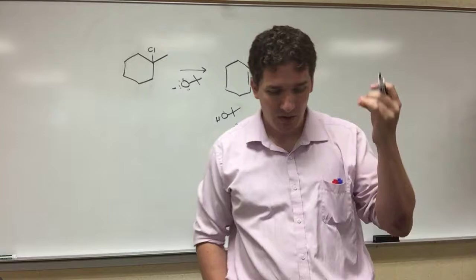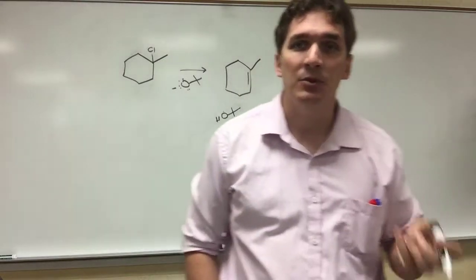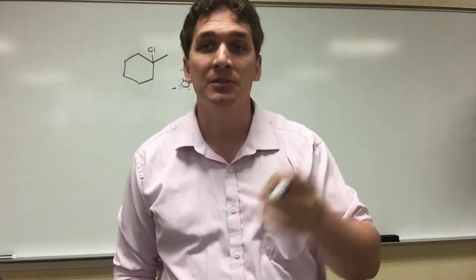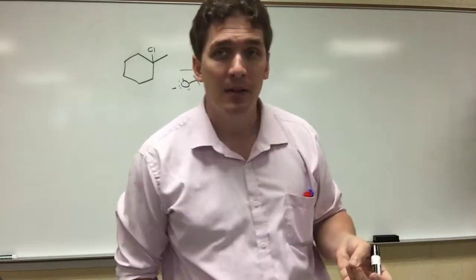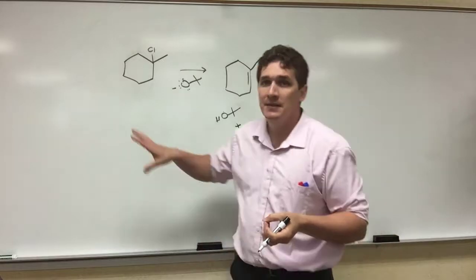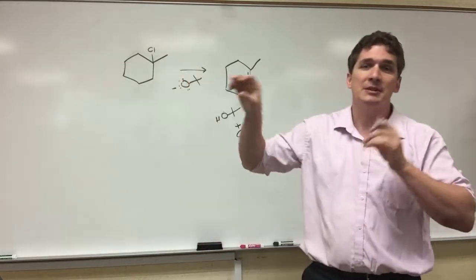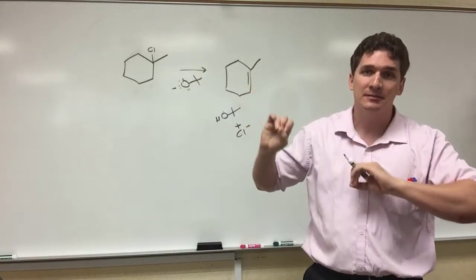So this is called dehydrohalogenation. We are removing a hydrogen and removing a halogen. So we have the 'de' for removal, 'hydro' for the hydrogen, 'halogenation' for the halogen. And this is how we form a double bond starting with a secondary or tertiary halogen.